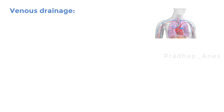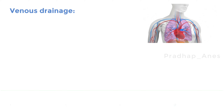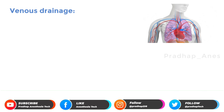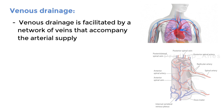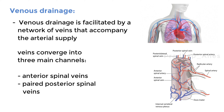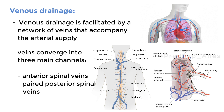Venous drainage. As blood circulates through the spinal cord, it needs a way to return to the heart and lungs for oxygenation. Venous drainage is facilitated by a network of veins that accompany the arterial supply. These veins converge into three main channels: the anterior spinal veins and the paired posterior spinal veins, which collect deoxygenated blood and waste products. Eventually, the blood joins larger systemic veins and makes its way back to the heart for reoxygenation.